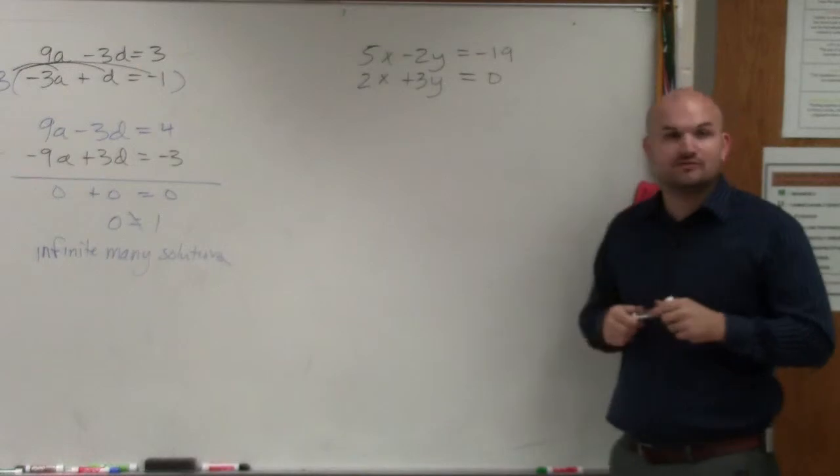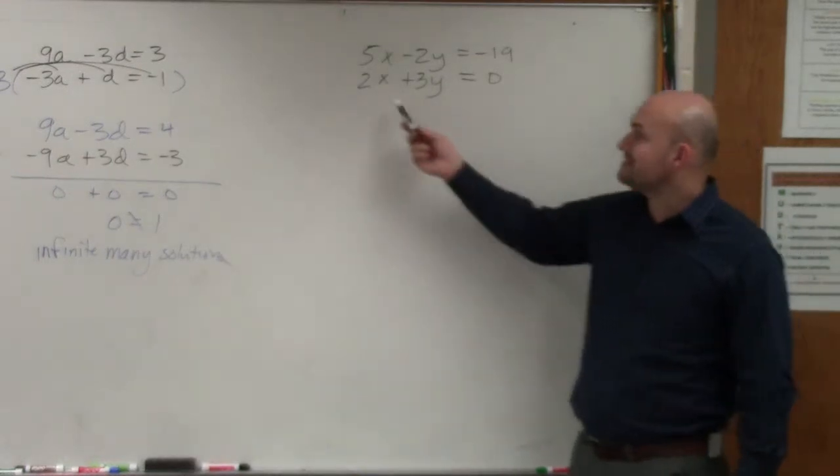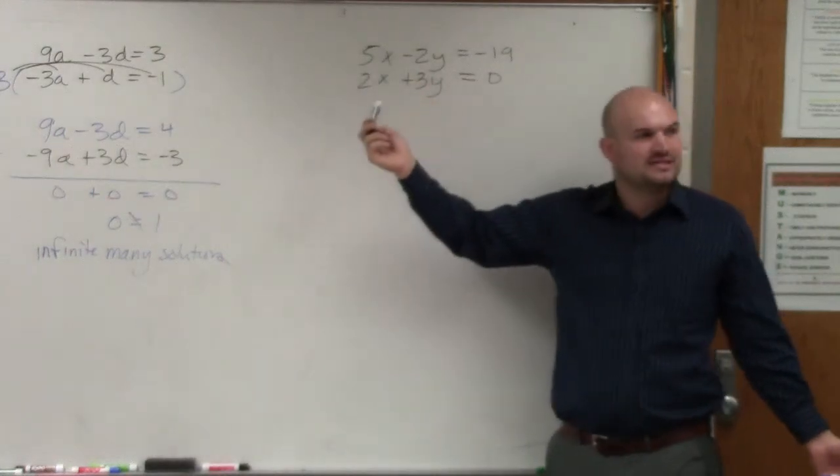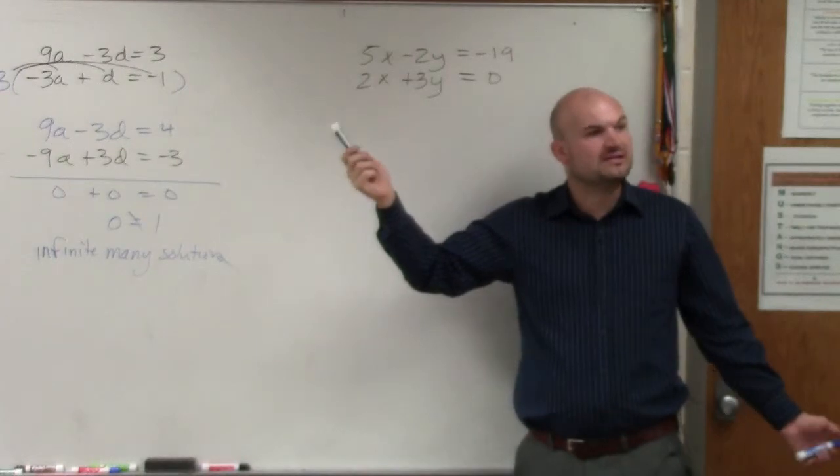Then look for variables that have the common LCM. In this case, you can see that 2 and 5, the LCM is going to be 10. 3 and negative 2, LCM is going to be 6.